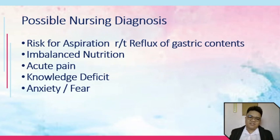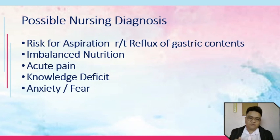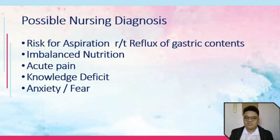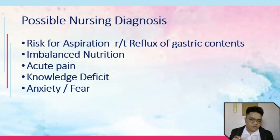Common nursing diagnoses for this patient include: risk for aspiration related to reflux of gastric contents; imbalanced nutrition, less than body requirements, related to feeling of fullness after eating; acute pain related to structural protrusion of the hernia above the abdomen; knowledge deficit related to diet and lifestyle changes; anxiety and fear related to undergoing surgery; and ineffective tissue perfusion, especially relevant in paraesophageal hernia.